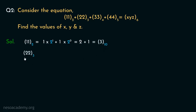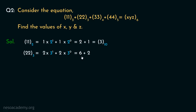Now for 22 of base 3: the place values are 3 raised to the power 1 and 3 raised to the power 0. So 2 times 3 is 6, and 2 times 1 is 2. Adding them: 6 plus 2 is 8. Therefore, 22 in base 3 is 8 in decimal.